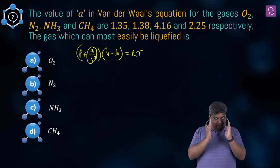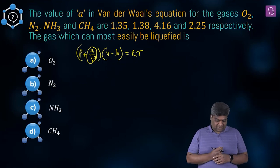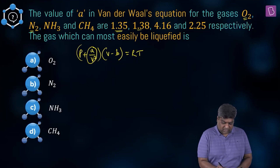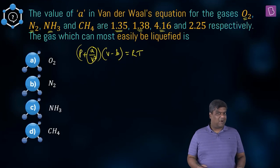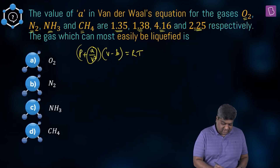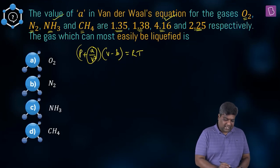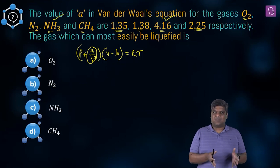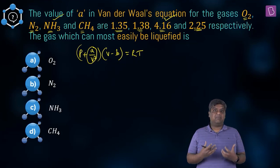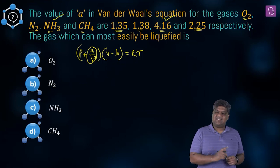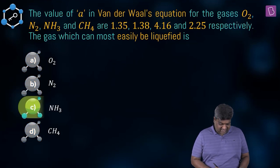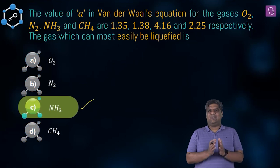Comparing the values: O₂ has a = 1.35, N₂ has 1.38, NH₃ has 4.16, and CH₄ has 2.25. The greatest value is 4.16, belonging to NH₃. Among these four gases, NH₃ has the greatest intermolecular forces of attraction and is therefore most easily liquefiable. The correct option is option C, which is NH₃.